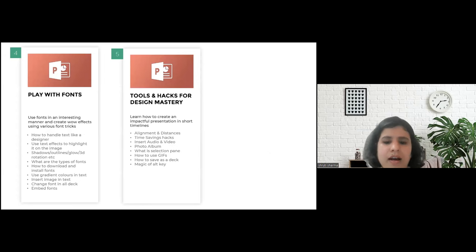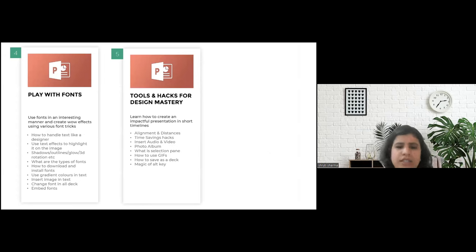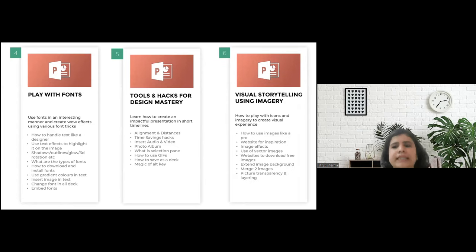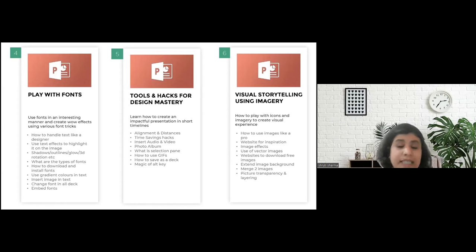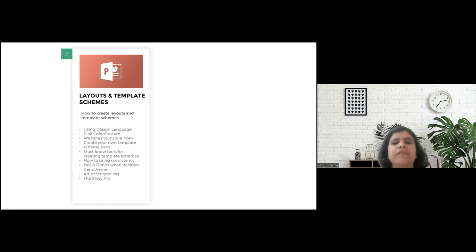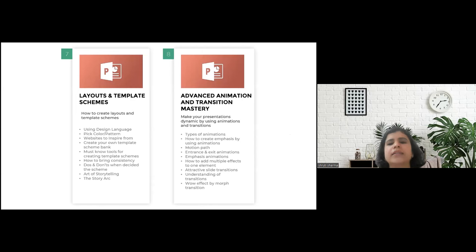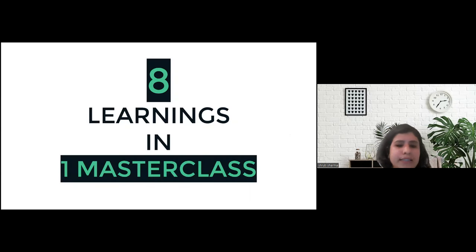Module five is Tools and Hacks for Design Mastery — alignment, distances, and many more time-saving hacks. Module six is Using Imagery for Storytelling — what imagery to use, free imagery websites, removing and extending background, picture transparency. Module seven is Layout and Template Scheme to create a complete template. Module eight is Animation and Transition — how to use various animations and transitions. Eight learnings in one master class, and that's not all.